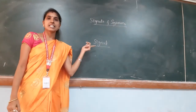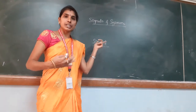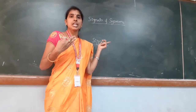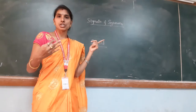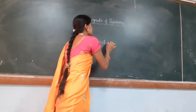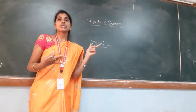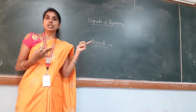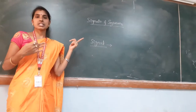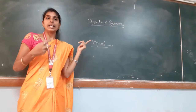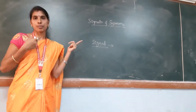What is a signal? A signal is a physical phenomenon which is intended to convey information. Signal is in the form of a function of time. The best example of a signal is electric voltage or current. Another best example is human speech.